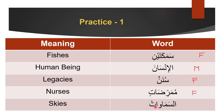Al-samāwāt: it has the -ātu combination ending. The meaning is 'skies,' so it is a non-human feminine plural, which we know is again female.